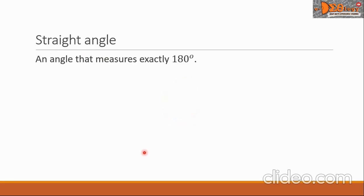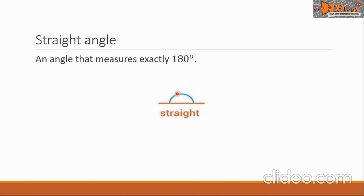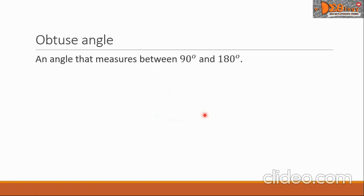The next angle is called the straight angle. It is an angle that measures exactly 180 degrees. Here is a picture of a straight angle. It looks like a straight line — that's why the name is straight angle.